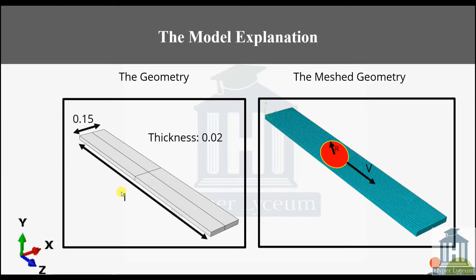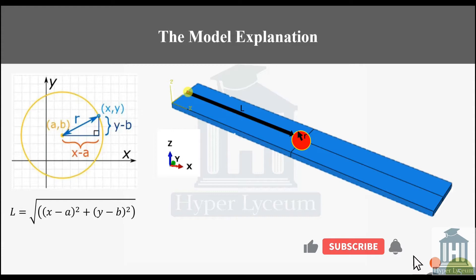The length, width, and thickness of the components are 1, 0.15, and 0.02 meters respectively. The loading area is defined as a circle with a radius of 0.03. The equation used in this example is shown here. L represents the distance from the center of the circle to the origin of the coordinates. A and B are the distances from the center of the circle to the origin.